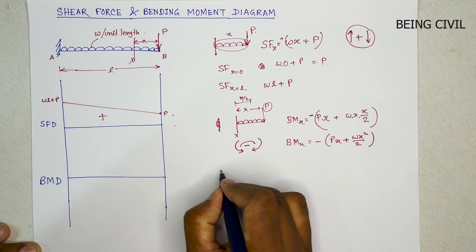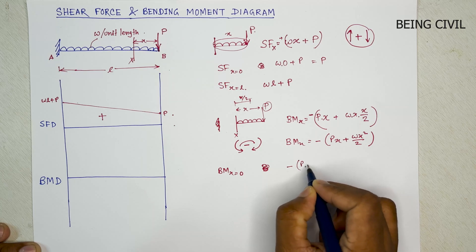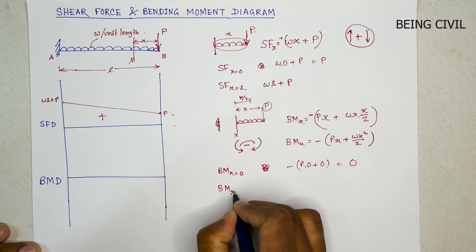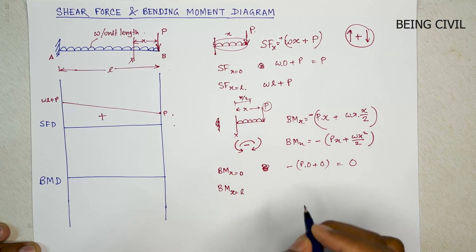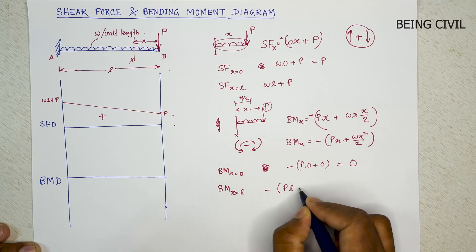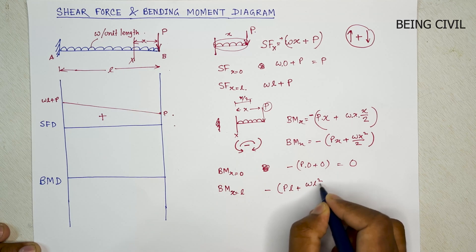Now at X equal to 0, minus P into 0 plus 0, so 0. And at fixed end, so X equal to L, it will be minus PL and WL squared by 2.